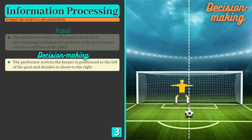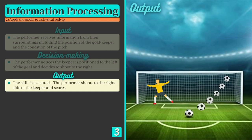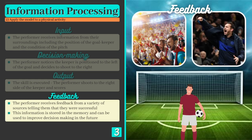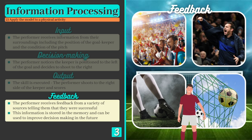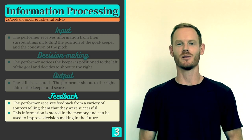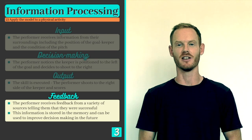At the decision making stage, the player notices that the goalkeeper is positioned left of centre and decides to shoot to the more open right side. At the output stage, the skill is executed and a goal is scored. At the feedback stage, the player receives feedback from a variety of sources including the crowd, coach, team mates, the feel of the movement and the sight of the ball hitting the net, all of which tell him that he was successful. As a result he'll be more likely to make the same decision when faced with a similar situation in the future.